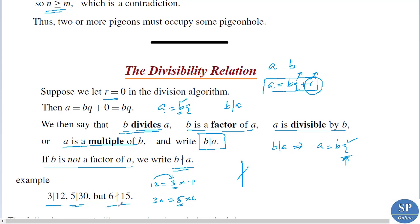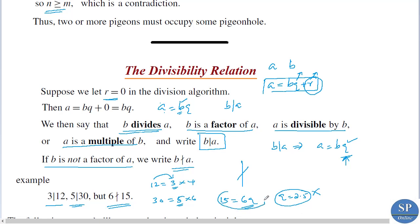But 6 does not divide 15, because we cannot write 15 as 6 times q for any integer q. In fact, 15 divided by 6 equals approximately 2.51, which is not an integer. So there does not exist an integer q such that 15 equals 6 times q. Therefore, 6 does not divide 15.